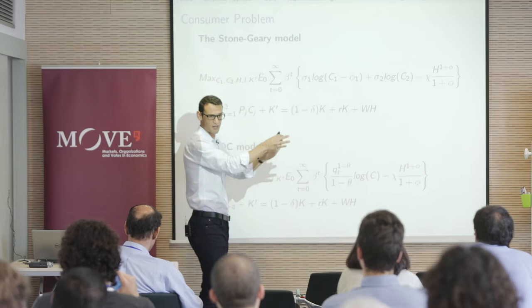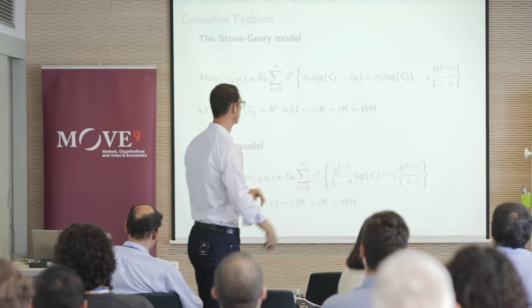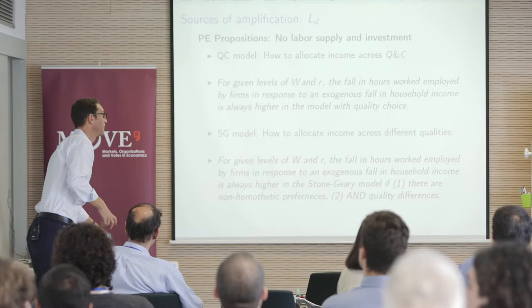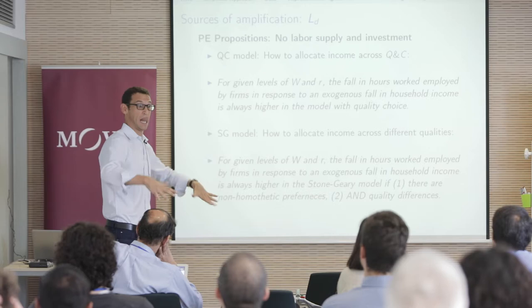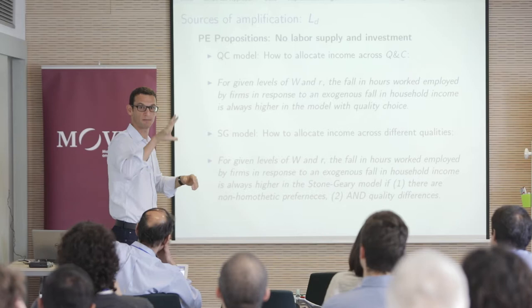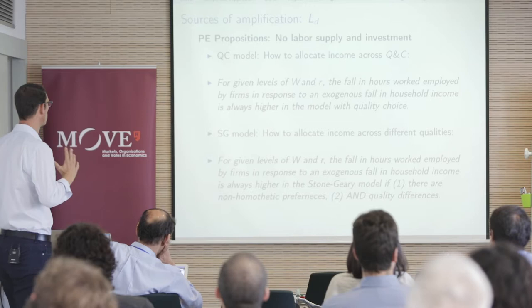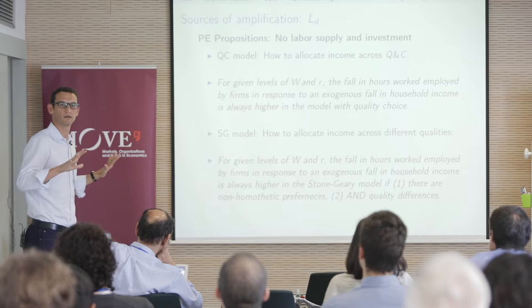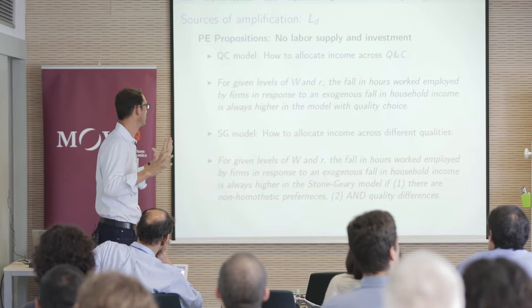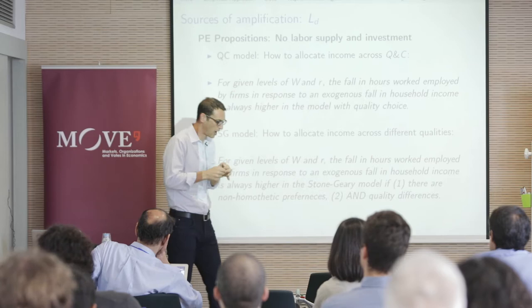What this model generates is a lot of amplification in the labor market. Many of the puzzles we teach in first-year macro are disappearing here. Let me break it into a labor demand channel and a labor supply channel. For labor demand, in the partial equilibrium model without labor supply or investment, the first proposition says: for given levels of W and R, in the model where firms choose quality, the response of hours to a negative income shock is always higher than in the model with no quality choice.